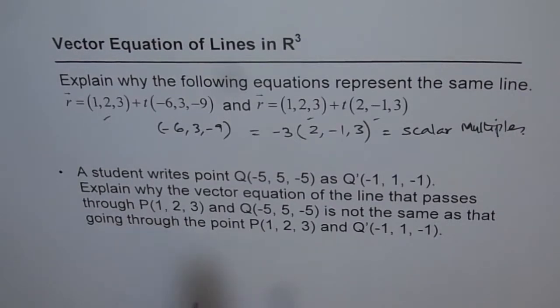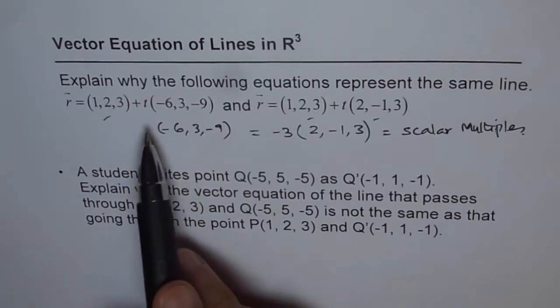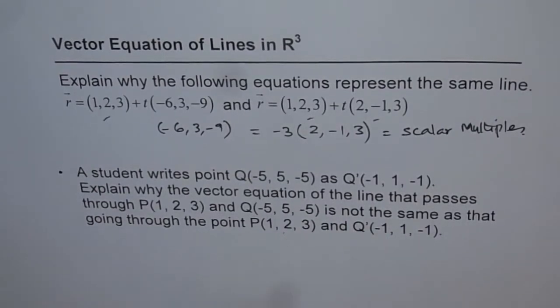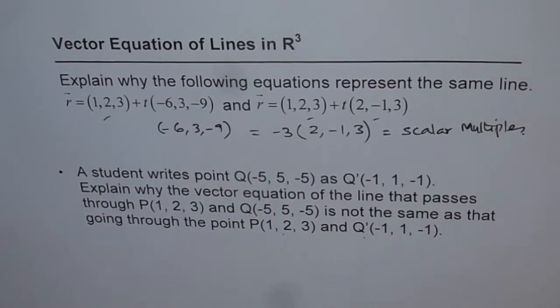Explain why the vector equation of the line that passes through point P which is (1, 2, 3) and Q which is (-5, 5, -5) is not the same as that going through the point P and Q'. Can you explain this why?